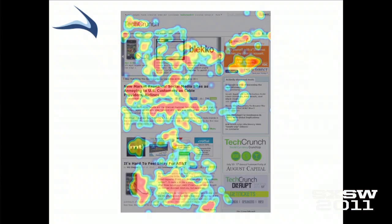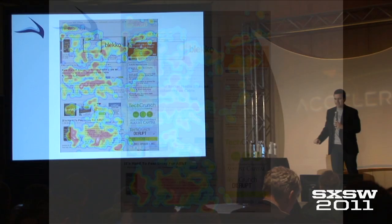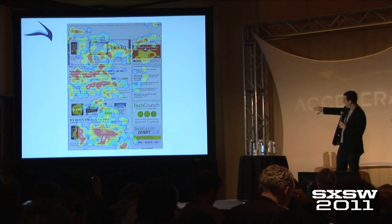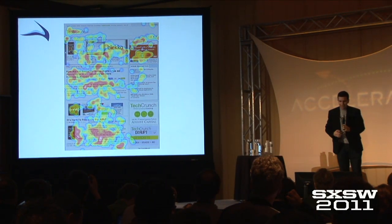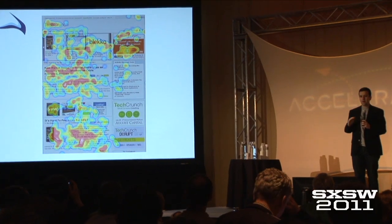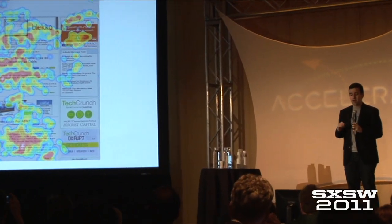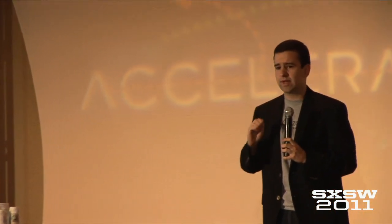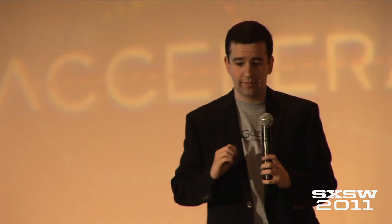What matters to brand advertisers is eyeballs. Knowing whether or not somebody viewed your message or saw your logo allows advertisers to make intelligent design and purchasing decisions. Here we have a study we ran on a TechCrunch homepage. The ads in between the articles got a decent amount of attention, as did the orange ING Direct ad in the top right. But the TechCrunch event ads in the bottom right — not so much. This kind of information is incredibly valuable to publishers and advertisers alike, and GazeHawk is the only company that can effectively provide it.